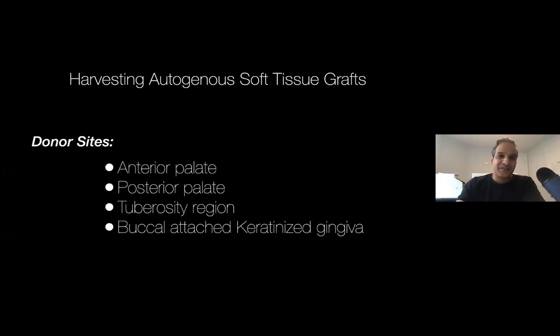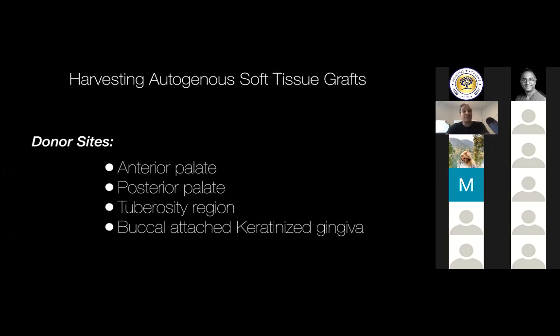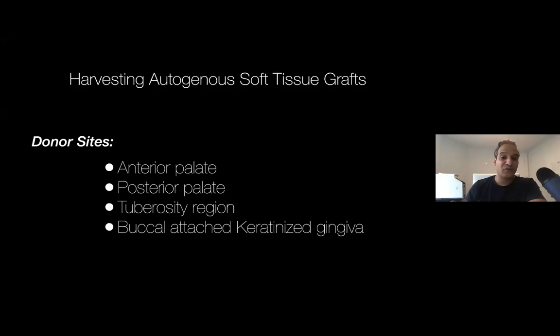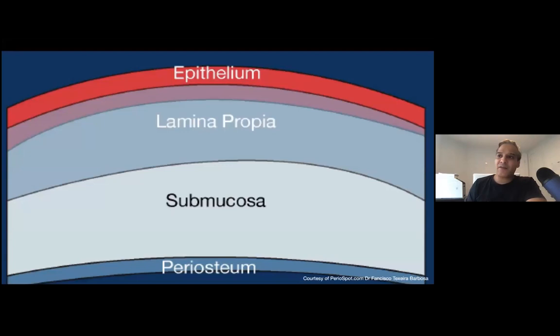Donor sites in the mouth: you can get tissue from the anterior palate, posterior palate, midline of the palate — for a free gingival graft you just want a very thin layer of keratinized tissue, so literally 1mm in thickness is sufficient. You can also harvest from the tuberosity area. And in some patients with very thick buccal tissue, you can actually harvest a future graft just from buccal tissue neighboring the site. So there are plenty of places to harvest.